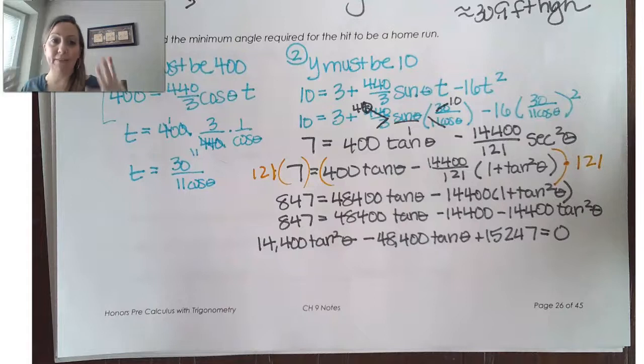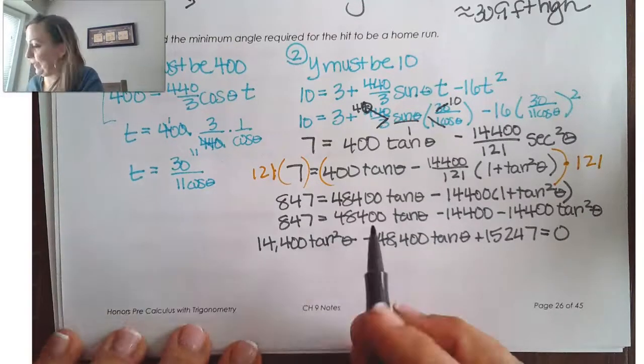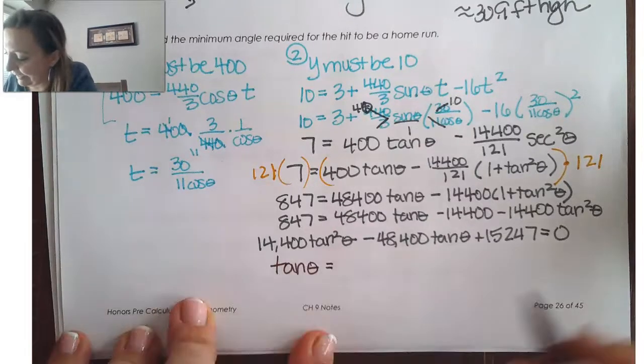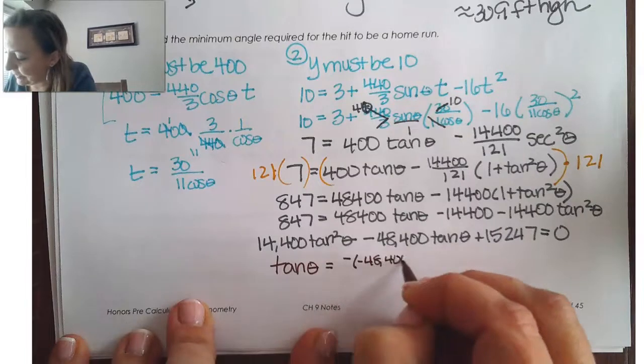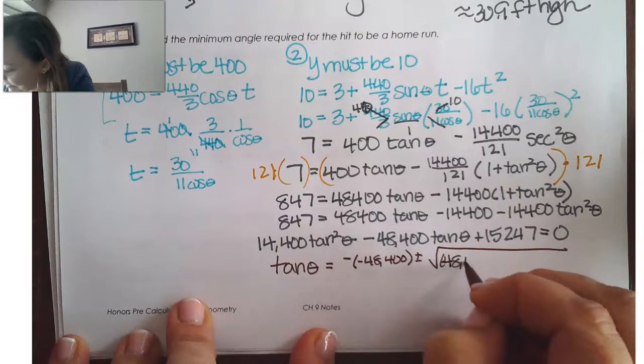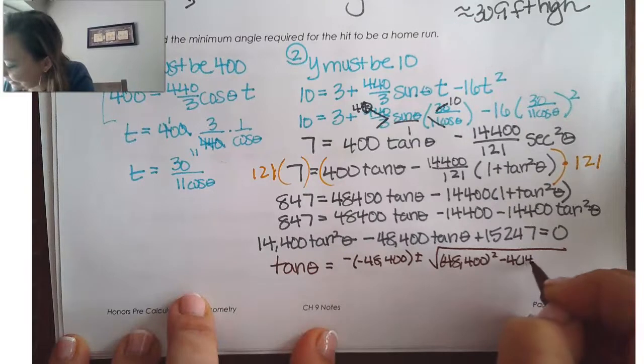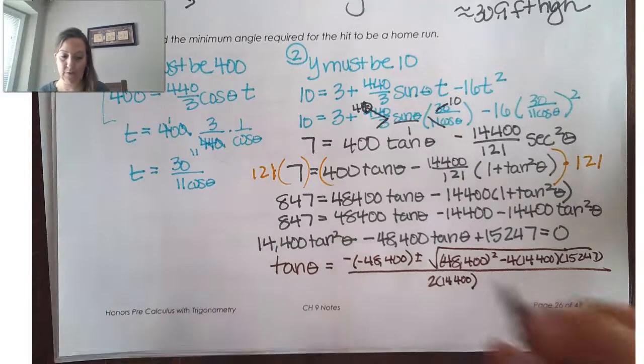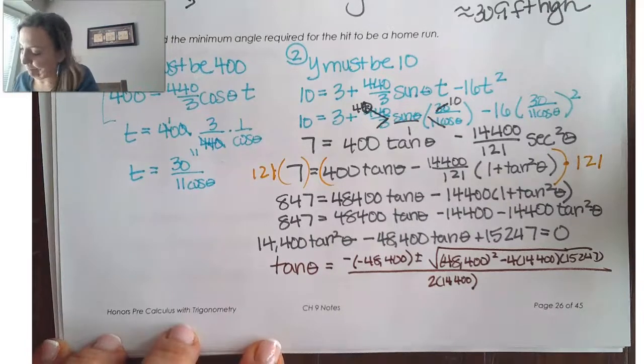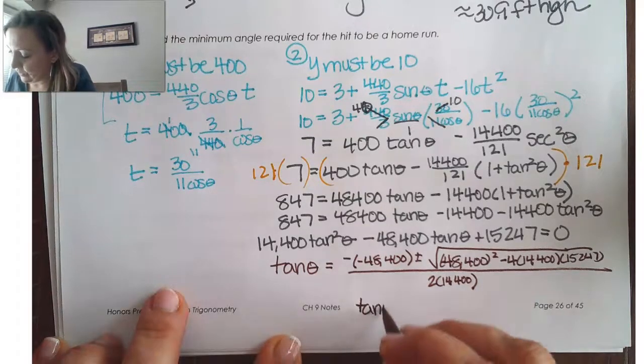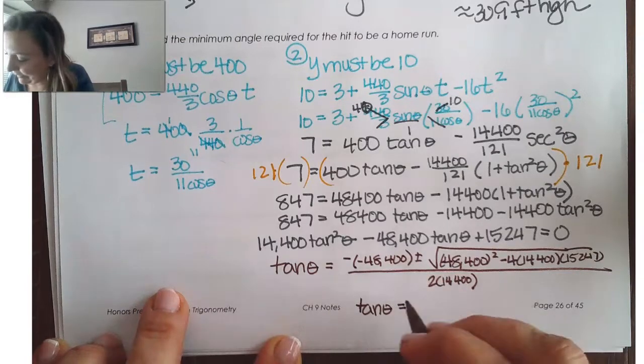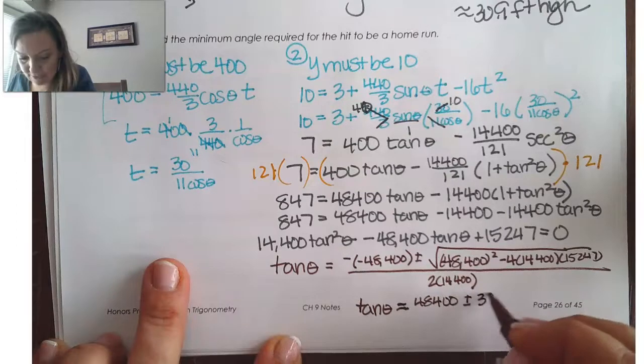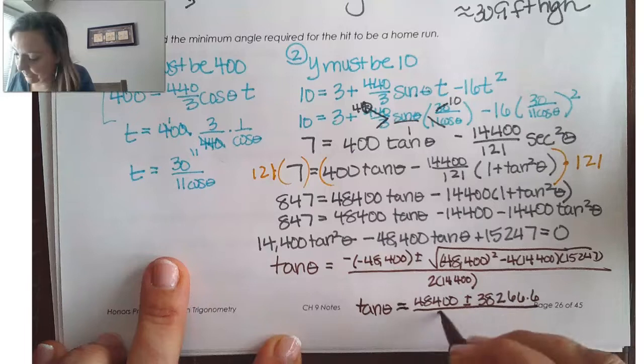So, this is a really pretty quadratic. And how would we need to solve this? We'll by the quadratic formula. Except we're not finding theta. What we're doing when we use the quadratic formula here is we would be finding the tangent of theta. So, that's going to be negative B plus or minus the square root of B squared minus 4AC all over 2A. So, what happens is when we find this, we'll get that tangent theta is going to equal, well, be approximately equal to 48,400. If we take this, this ends up being about 38,266.6 and this ends up being 28,800.